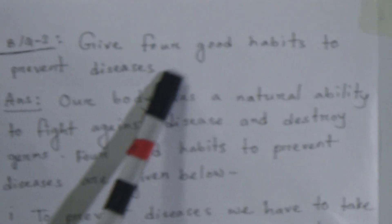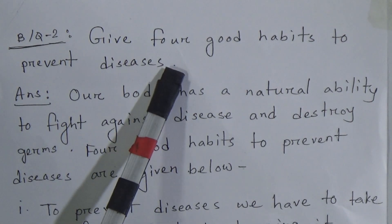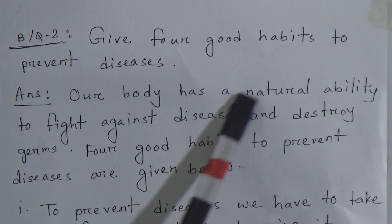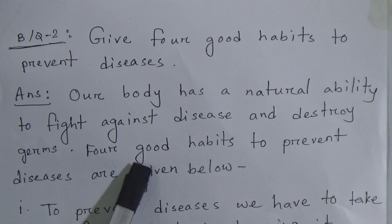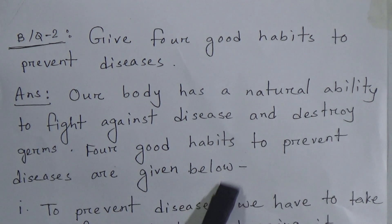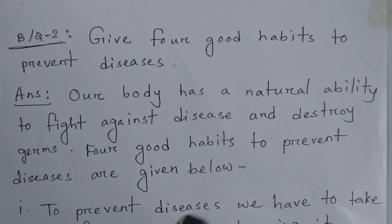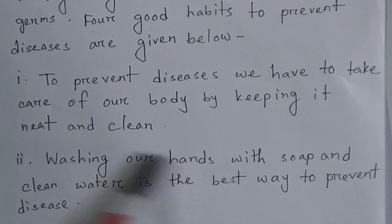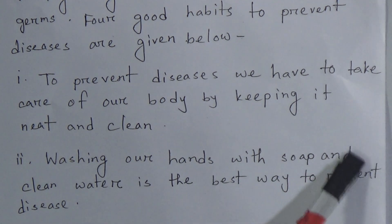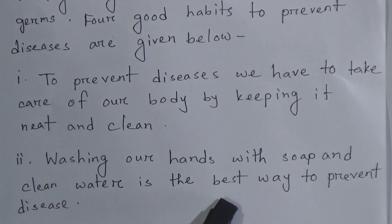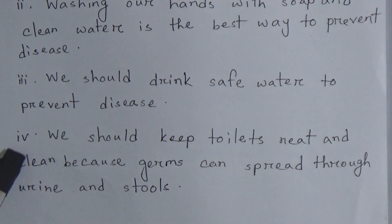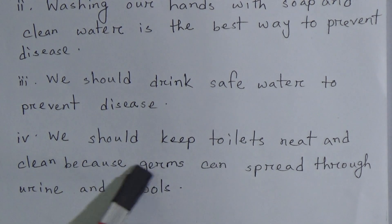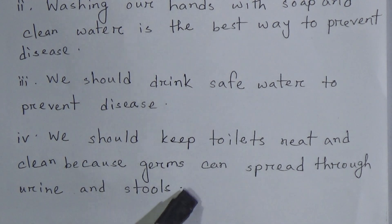Broad question number two — give four good habits to prevent diseases. Answer: Our body has a natural ability to fight against diseases and destroy germs. Four good habits to prevent diseases: Number one — we have to take care of our body by keeping it neat and clean. Number two — washing our hands with soap and clean water is the best way to prevent disease. Number three — we should drink safe water to prevent disease. Number four — we should keep toilets neat and clean because germs can spread through urine and stools.